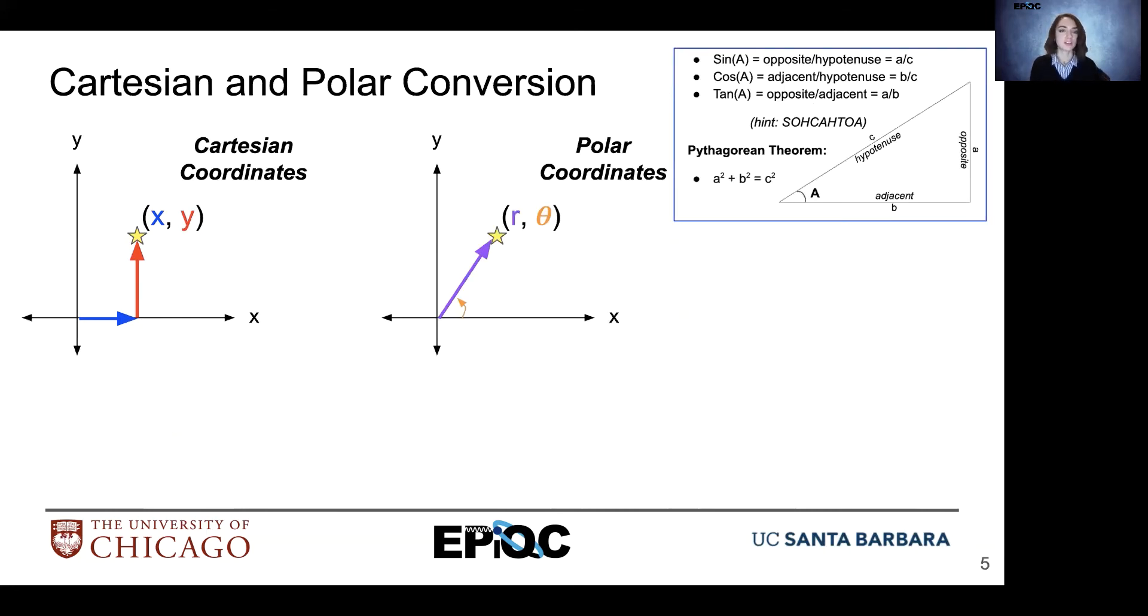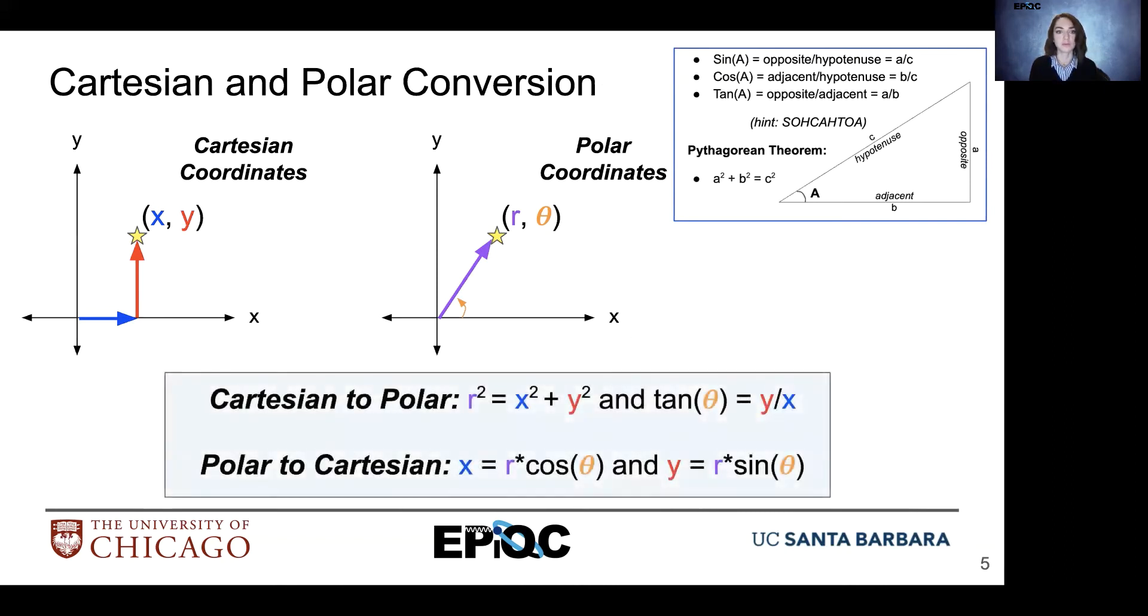So how do we relate Cartesian and polar coordinates? Well, we can move from Cartesian to polar with the following equations. So we have x squared plus y squared equals R squared. So that models our Pythagorean theorem. Y and x relate with tangent to give us a value of theta. So with those equations, we're able to determine R and theta.